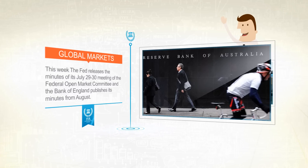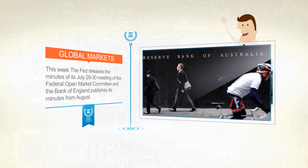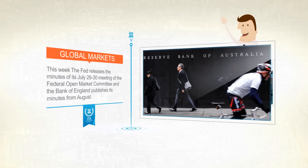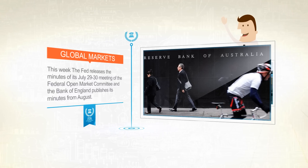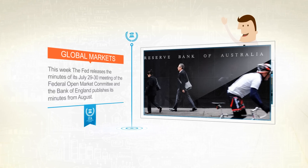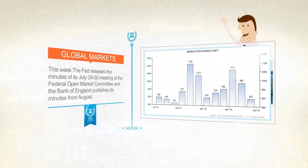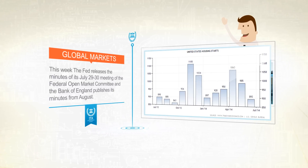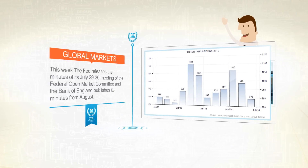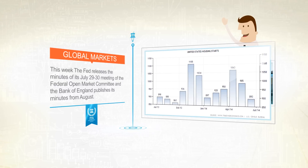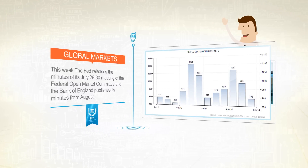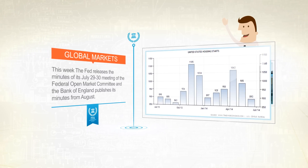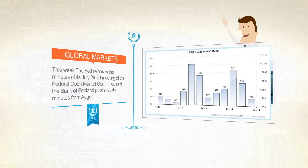Tuesday is a busy day. In the early session, the Australian Reserve Bank issues minutes from its latest board meeting held on August 5th. Later in the US, we will have US home construction data, also called housing starts, which rebounded in July from a month earlier when they slumped to a nine-month low, according to a Bloomberg survey.